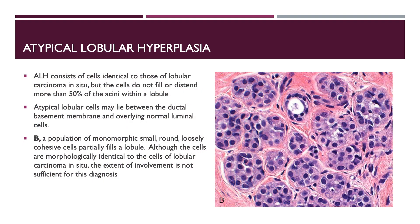Atypical lobular hyperplasia (ALH) consists of cells identical to those of lobular carcinoma in situ, but these cells do not fill or distend more than 50% of the acini within a lobule. Atypical lobular cells may lie between the ductal basement membrane and overlying normal luminal cells. A population of monomorphic, small, round, loosely cohesive cells partially fills the lobule. Although the cells are morphologically identical to lobular carcinoma in situ, the extent of involvement is not sufficient for that diagnosis.